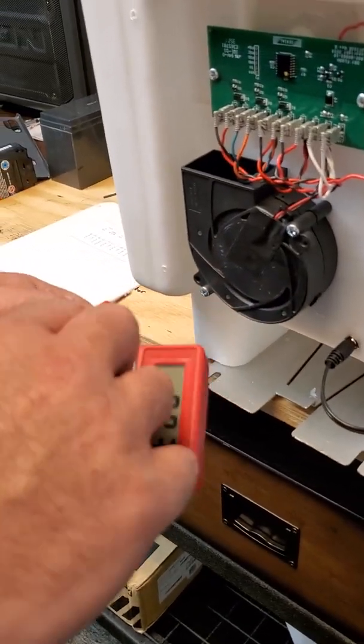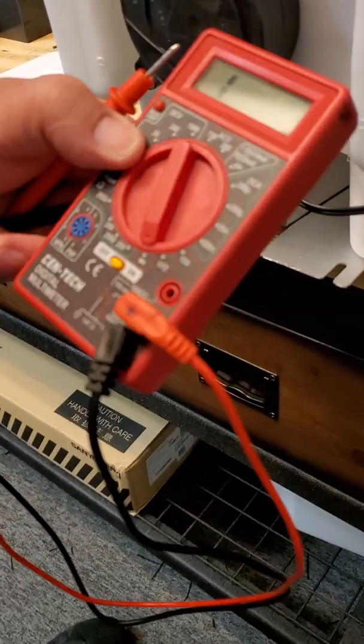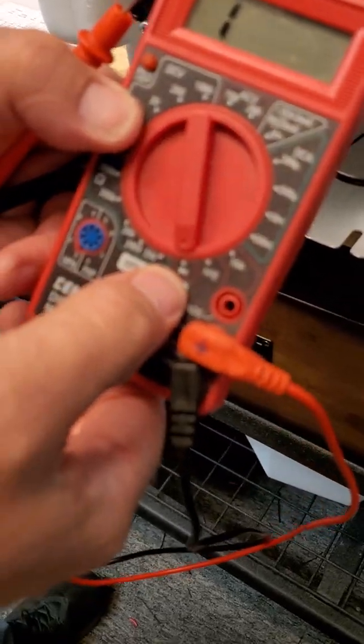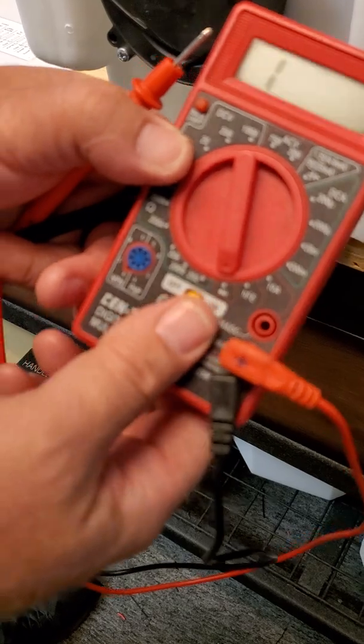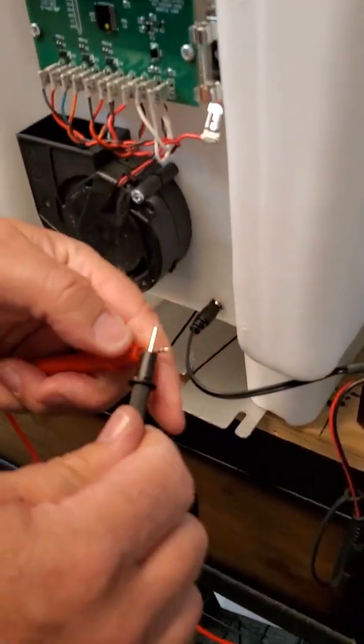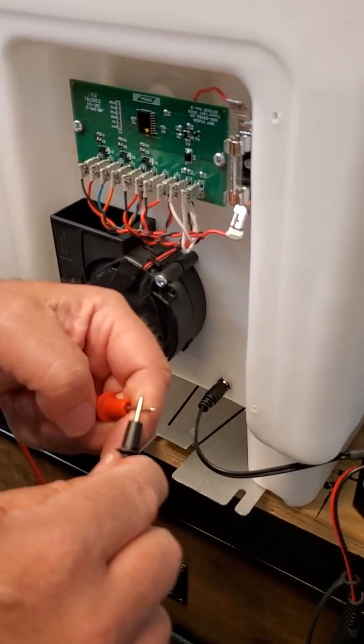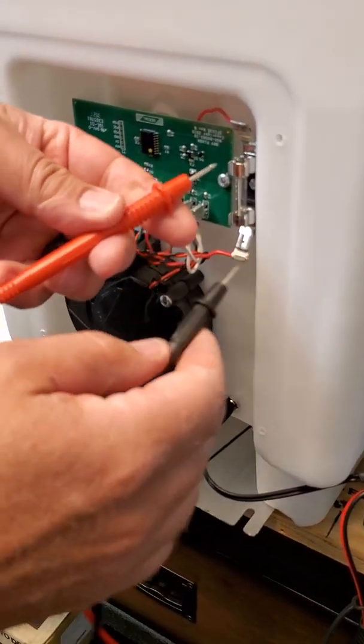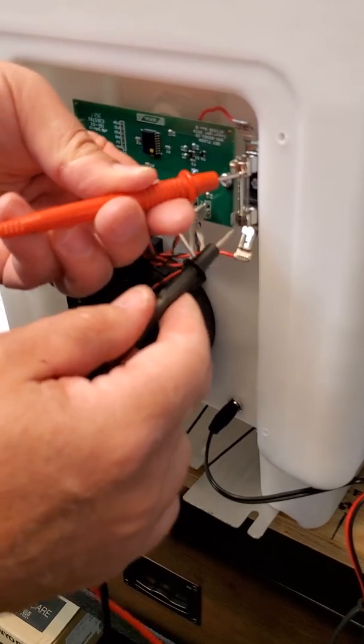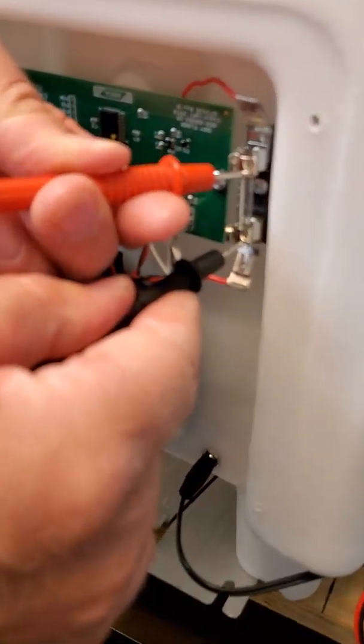We're going to show you how you can actually test the fuse. We're going to dial this down to this symbol here and check for continuity. We're just going to make sure that it's a continuous connection. We place one probe up on top, one probe down at the bottom, and you see our reading is very close to zero.